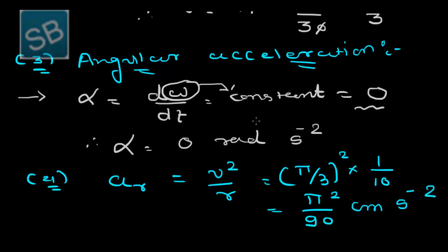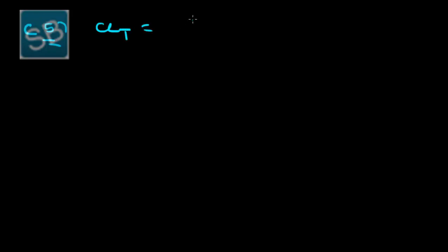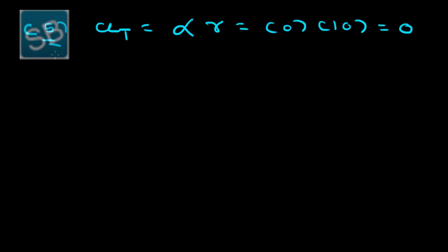In every quantity, write down the unit, otherwise marks will be deducted. Finally, the tangential acceleration aₜ equals α times r. Since α is 0 and r is 10 centimetres, aₜ is also 0.